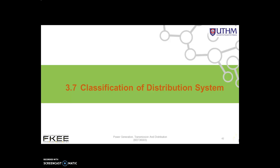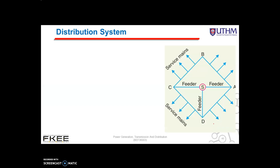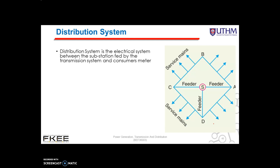Next is the classification of distribution system. The part of a power system which distributes electric power for local use is known as the distribution system. In general, the distribution system is the electrical system between the substation fed by the transmission system and the consumer's meter.